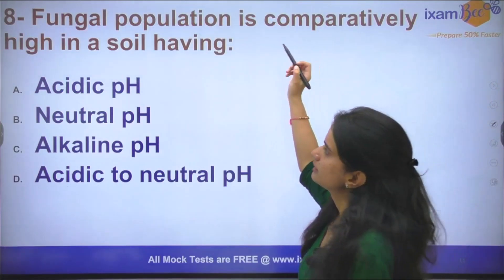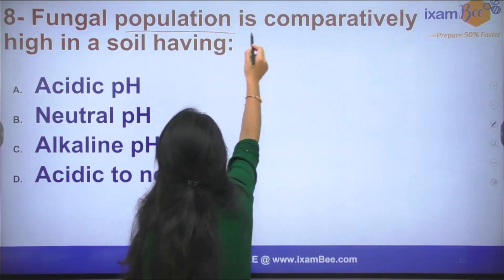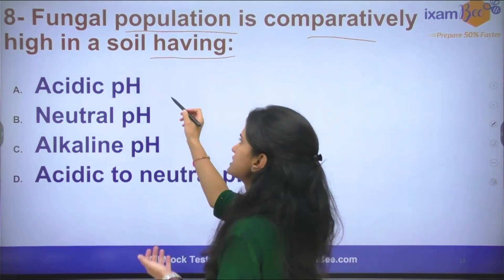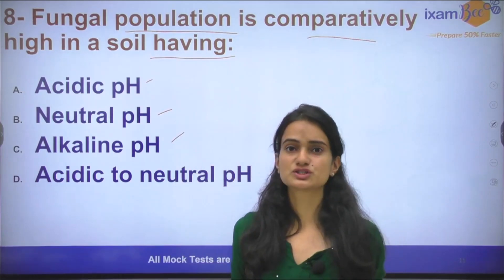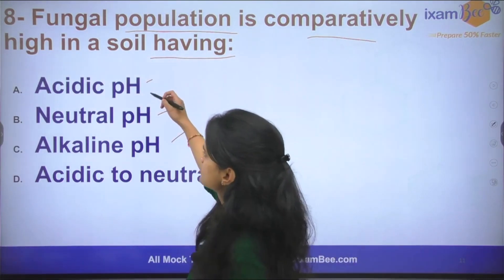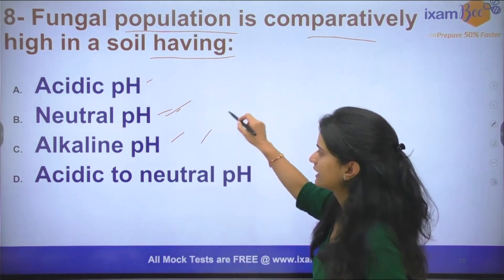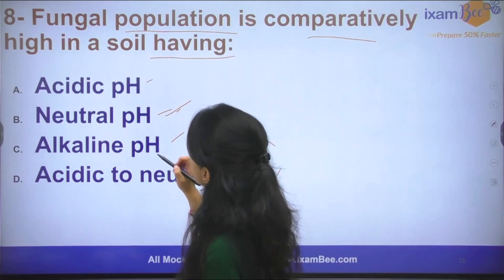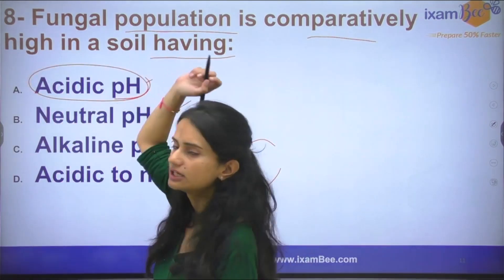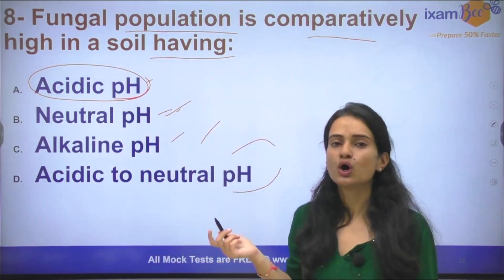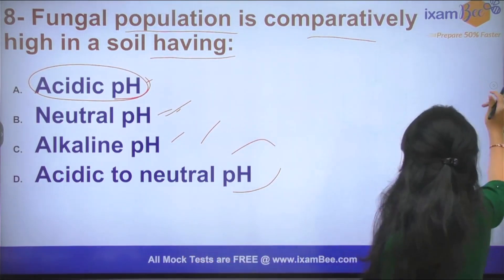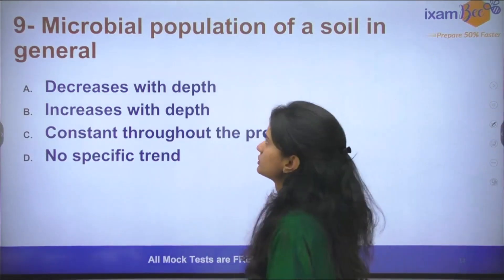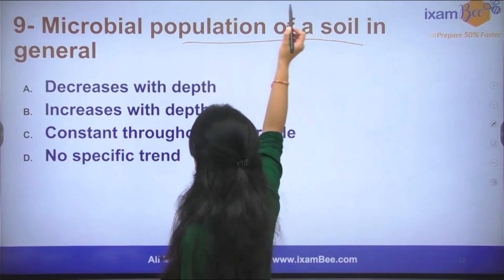The next question: Fungal population is comparatively high in which soil? The answer is acidic pH — under acidic conditions, fungal growth is greater.